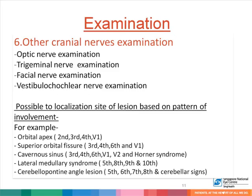Other cranial nerve examination is important to localize a pathology intracranially if multiple cranial nerves are involved. Optic nerve examination with visual acuity, color vision, confrontation visual fields, and looking for a relative afferent pupillary defect is critical. In addition, examine the trigeminal nerve, the facial nerve, and the vestibulocochlear nerve. For example, if there is a lesion in the orbital apex, the second and third cranial nerves along with the fourth and V1 branch of the trigeminal may be involved. A superior orbital fissure lesion involves the third, fourth, and sixth nerves along with V1, while cavernous sinus lesions classically present with third, fourth, sixth nerve involvement, V1 and V2 involvement, as well as Horner's syndrome.